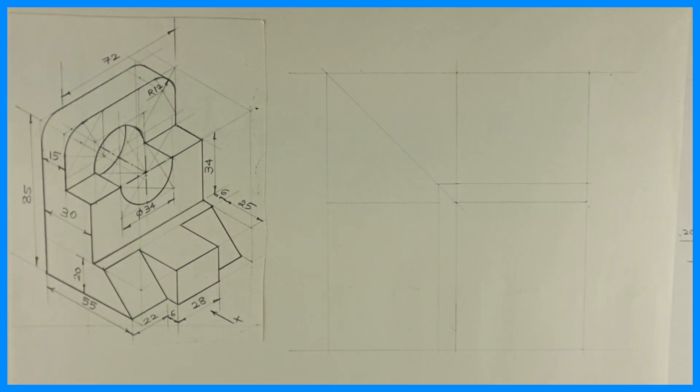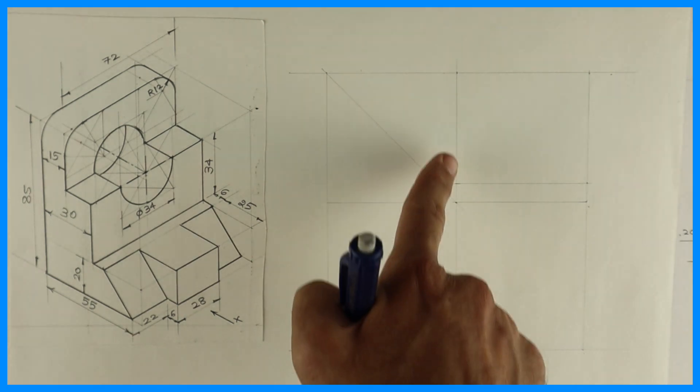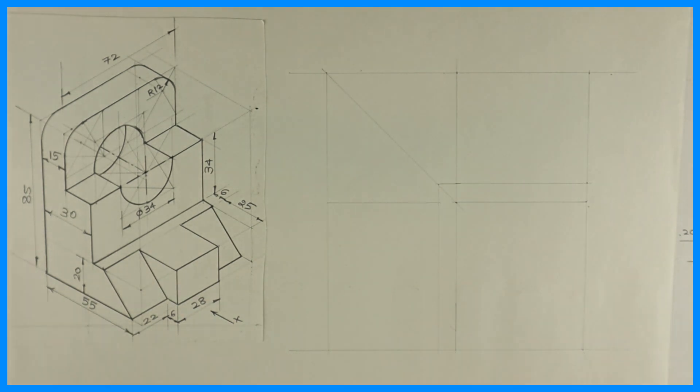Welcome to technical drawing. Today we are going to solve this sum in orthographic projection. See this front view, top view and left inside view. Yes, we are doing in third angle. If you see, length is 72, height is 85, and width is 55 plus 6. So we are doing it in third quadrant, so we'll start with front view.